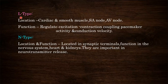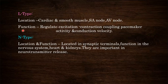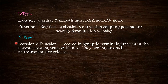The first type is L type. L type calcium channels are located in cardiac muscles, smooth muscles, SA node, and AV node. Their functions are to regulate excitation-contraction coupling, pacemaker activity, and conduction velocity.